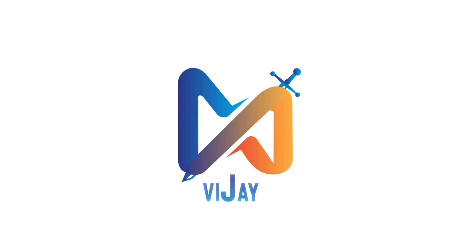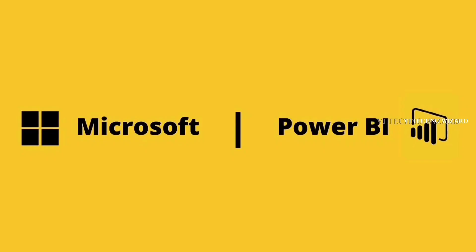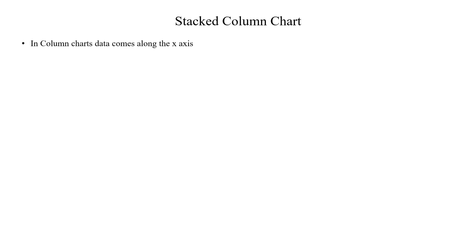Hello guys, welcome to VJ TechnoVisor. Today we will see a stacked column chart. In the stacked column chart, you can plot the data on the x-axis. In the vertical format, you can plot from the bottom to the top.